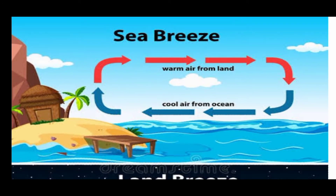People living in coastal areas experience an interesting phenomenon. During the day, the land gets heated faster than the water. The air over the land becomes hotter and rises up. The cooler air from the sea rushes in towards the land to take its place. The warm air from the land moves towards the sea to complete the cycle. The air from the sea is called sea breeze.